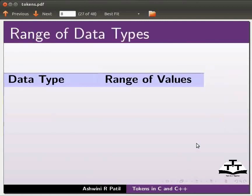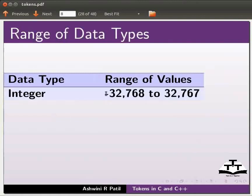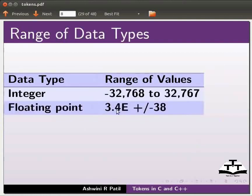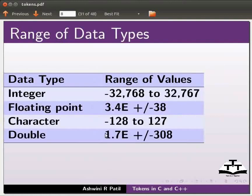Now we will see the range of data types. Integer data type has a range of this. Floating point has a range of this. Character has a range of this. And double has a range of this. The value stored in the variable must not be greater or less than this range.